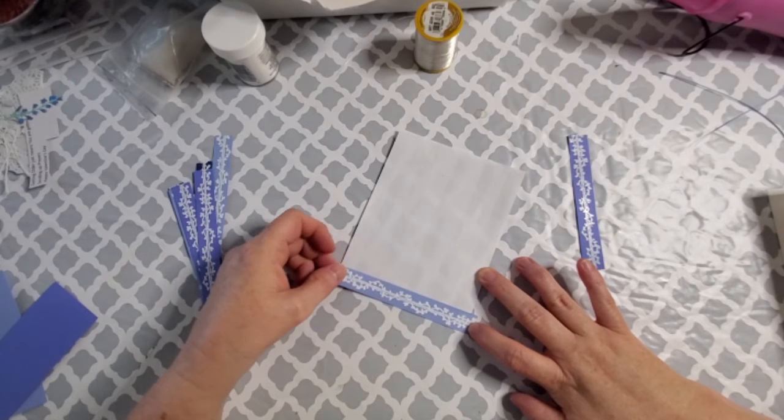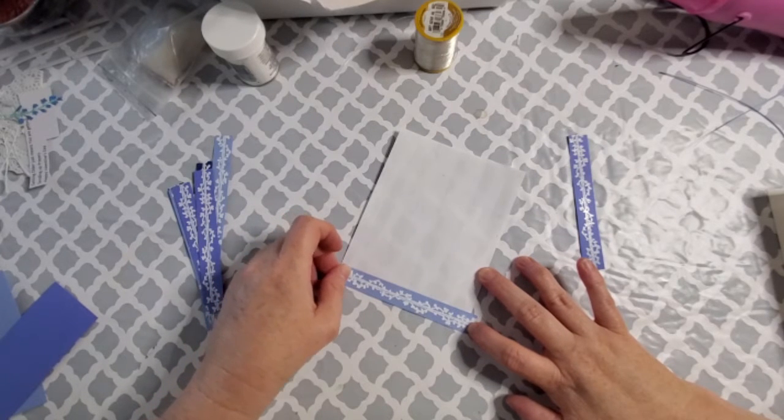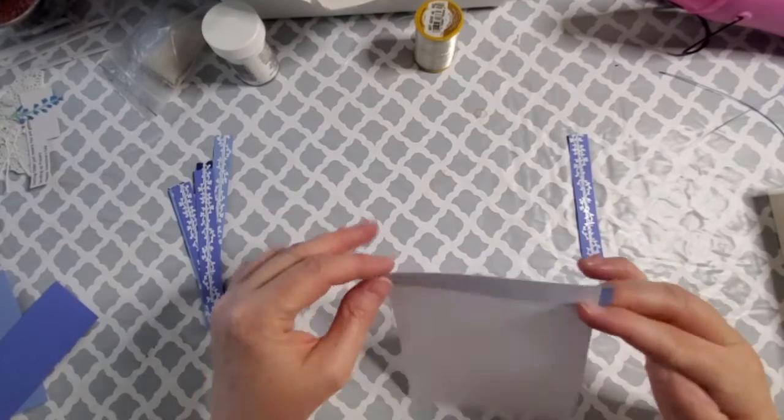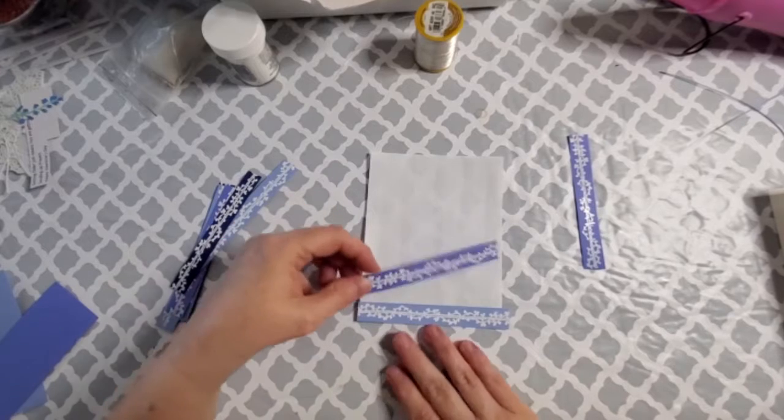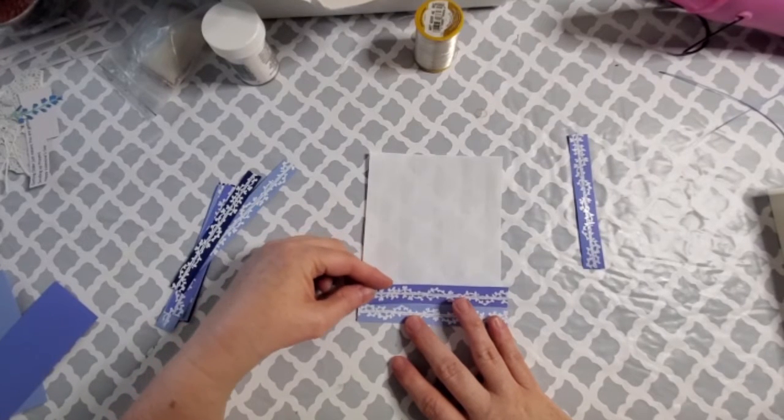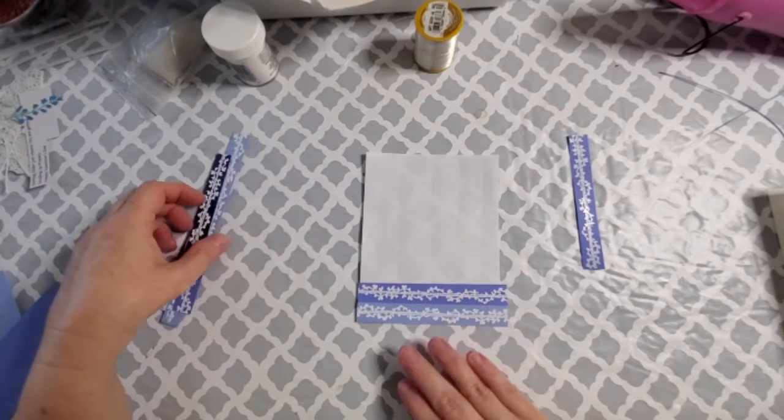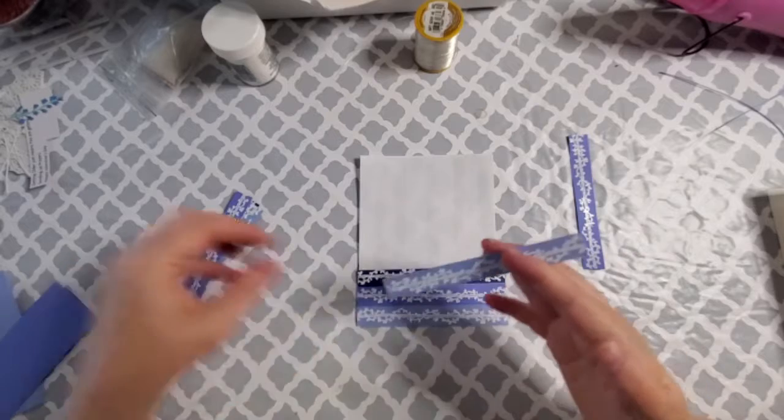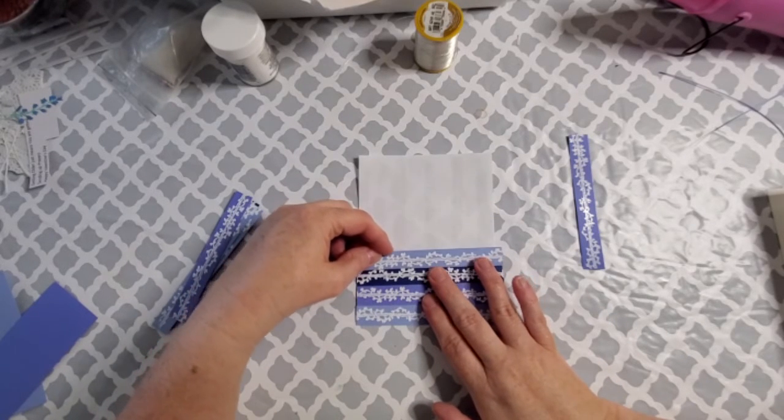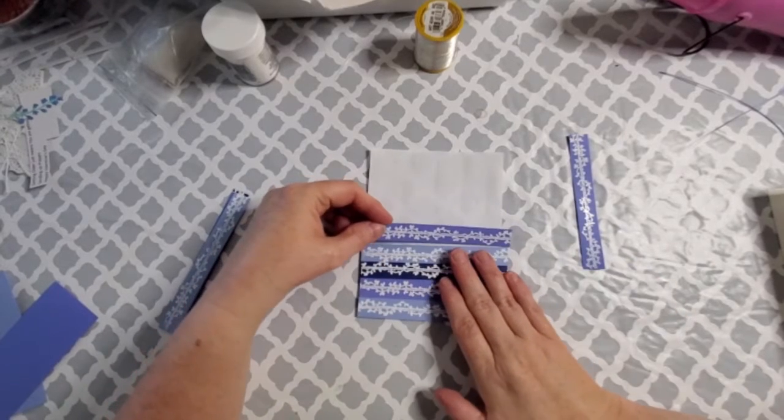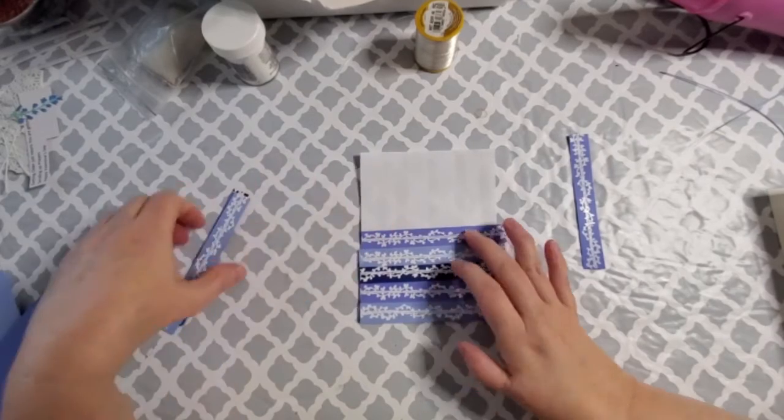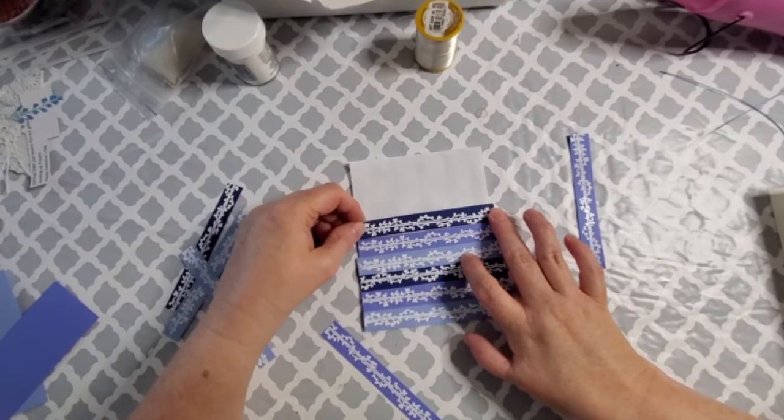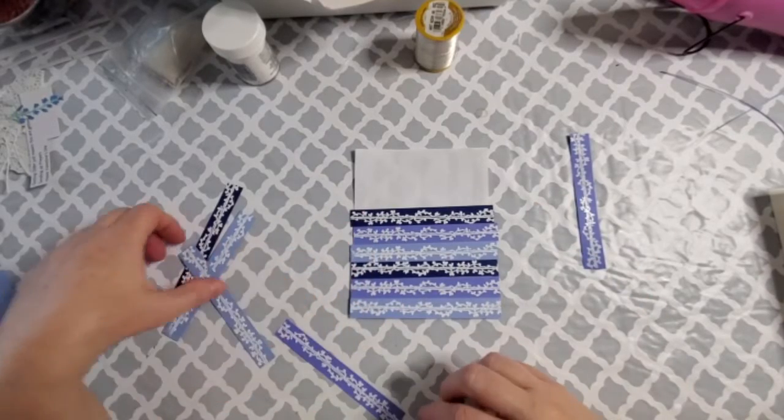So I'm going to line this up. Now these strips are four and a quarter long. You're going to have a little bit of wiggle room. Once you get the first one down and it's straight, and I think that's probably the straightest I've ever gotten anything, then you just line up the other ones. You just butt the next one up against it. So it's really easy peasy lemon squeezy.